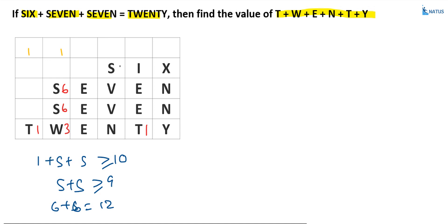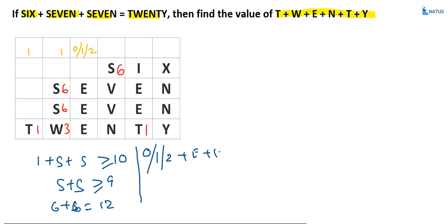Now substitute the value of S wherever S exists. We now know the values of T, S, and W. Come to the column for E: E plus E plus E. How many possibilities are there? 0 plus 0 equals 0 — that is one way. Next, 8 plus 8 equals 16; if carry exists, 8 plus 8 plus 2 equals 18 with 1 carry-over. We don't know the carry from this column, so let carry be 0, 1, or 2.